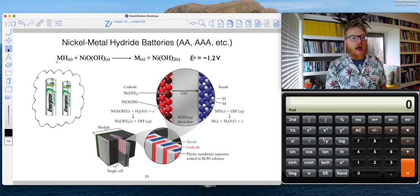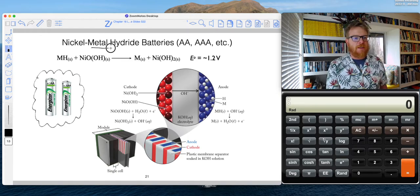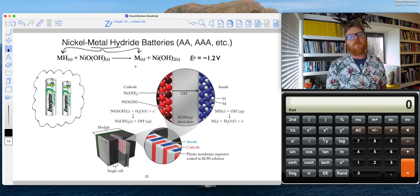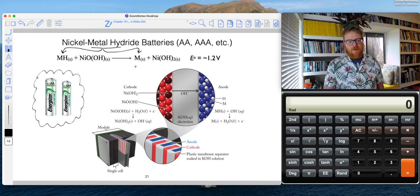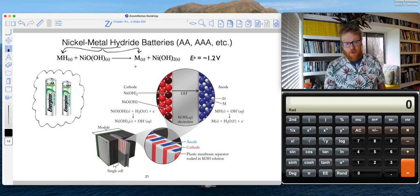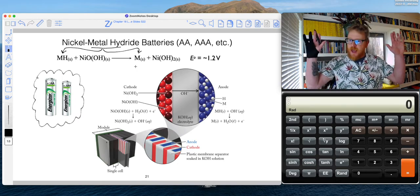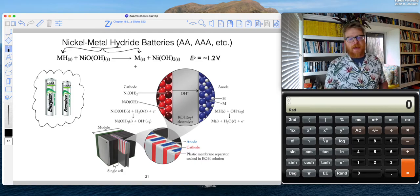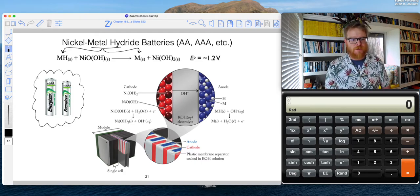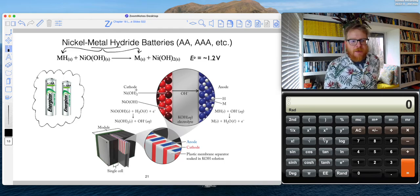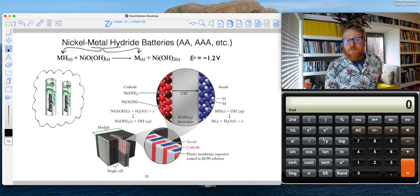And so in these nickel metal hydrides, so this is our metal hydride and here is our metal. Notice that it's given as M and that's because most battery companies, that's proprietary. They don't want you to know what metal they've put in there because they're making money off of this stuff. Yay, capitalism. In any event, the way that this works, we have this nickel hydroxide at the cathode, which you can see right here. And then you have the metal hydride at the anode.